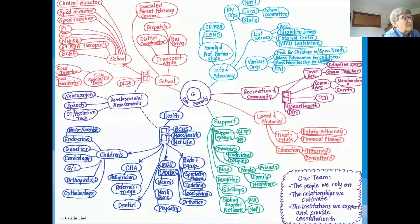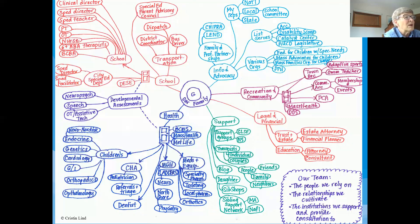Here's a care map. This is pretty complicated. It has been published in a number of places, at least in the child health literature. This was created by Kristen Lind, a mother of a child with very complex medical, developmental, and other health care needs. Kristen has been an advocate for children with special health care needs and shared this widely to show all the different resources and people involved in her child's life.